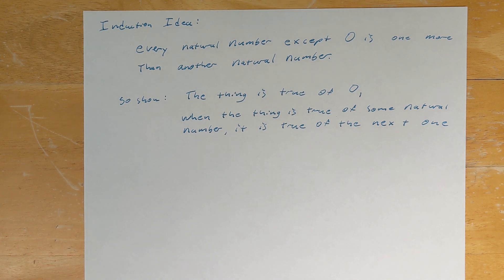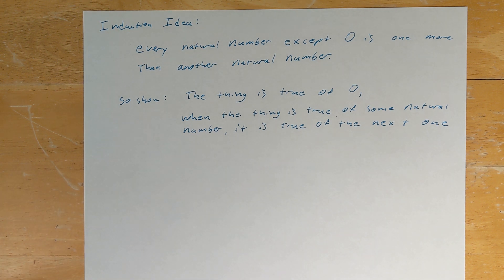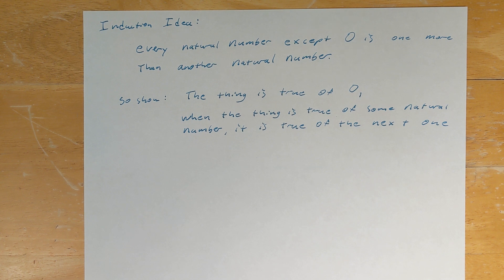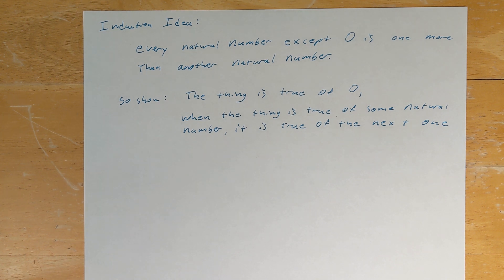The idea of a proof by induction is that we show something is true for every natural number by first observing that, with the exception of zero, every natural number is one more than some other natural number. So we first show that it's true for zero, and then we show that when that thing is true for some natural number, it's always going to be true for the next one as well. Since it's true for zero — the only natural number without something before it — and whenever it's true for one thing it's true for the next, we conclude it's true for every natural number: true for zero, which makes it true for one, which makes it true for two, etc.